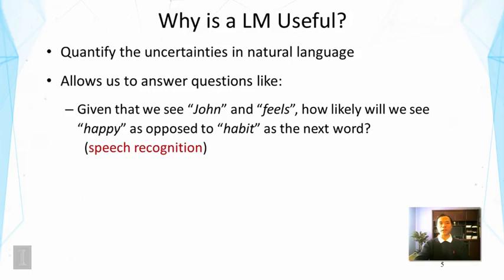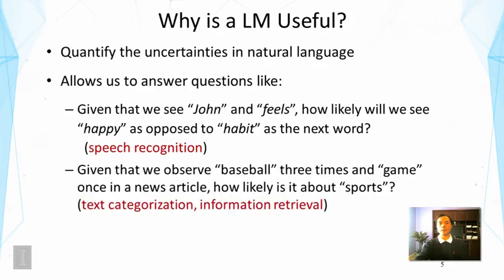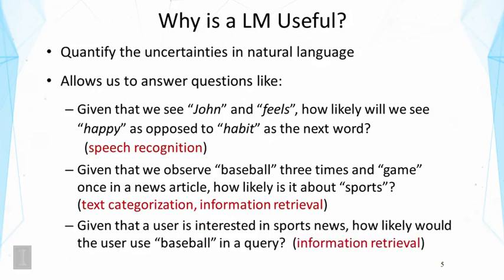Given that we see 'charm' and 'feels,' how likely will we see 'happy' as opposed to 'habit' as the next word? This is very useful for speech recognition because 'happy' and 'habit' have similar acoustic signals, but the language model tells us 'charm feels happy' is far more likely. Another example: given that we observe 'baseball' three times and 'game' once in a news article, how likely is it about sports? This is related to text categorization and information retrieval, and also to the query likelihood discussed in the previous lecture.